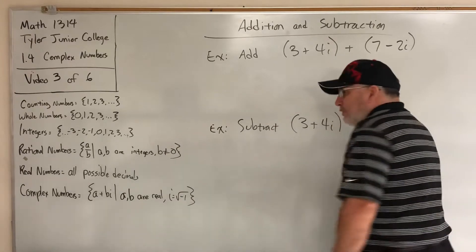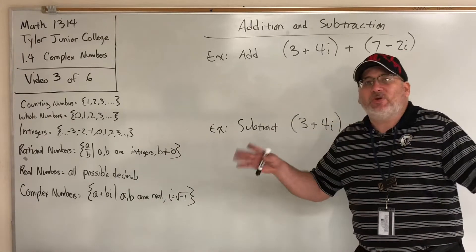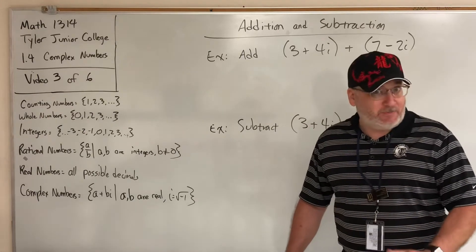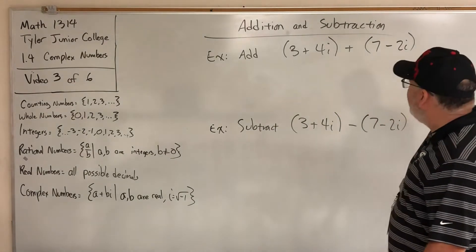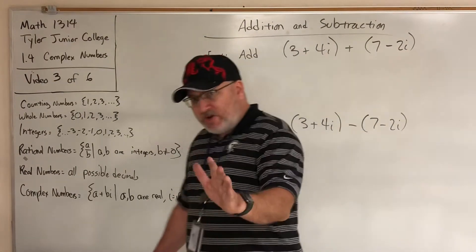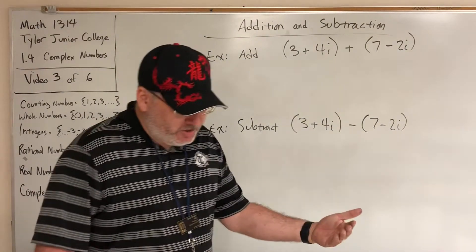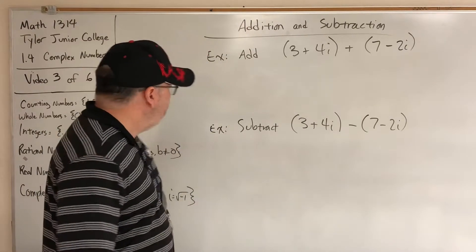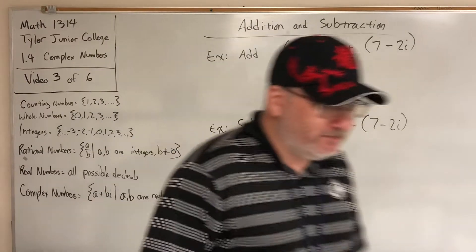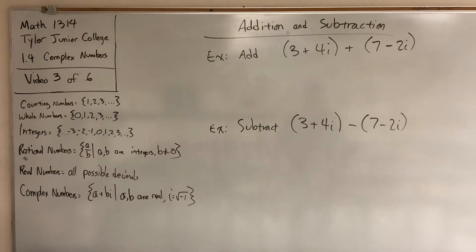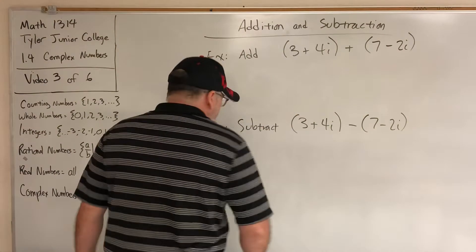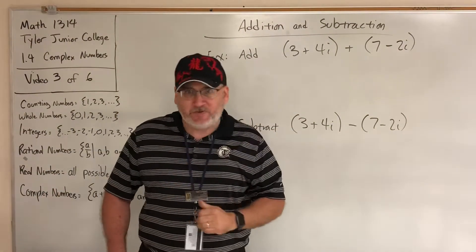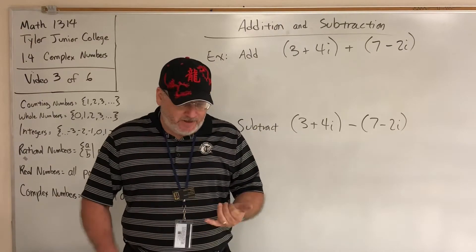So what do we do with complex numbers? The same thing you do anytime you learn about a new type of number: you learn arithmetic. We're going to start with addition and subtraction — it's so easy and intuitive there's a chance you can figure it out yourself. The assumption coming into college algebra is that you already know how to combine like terms, and that's really all you have to do.